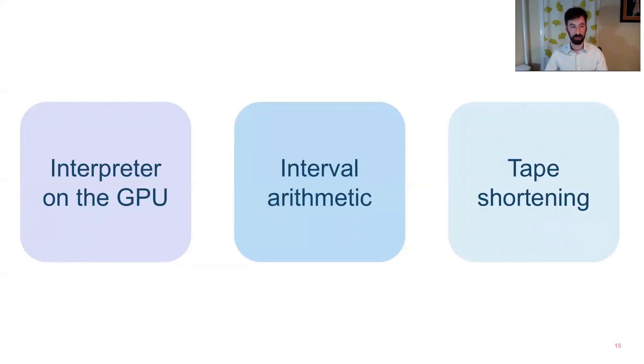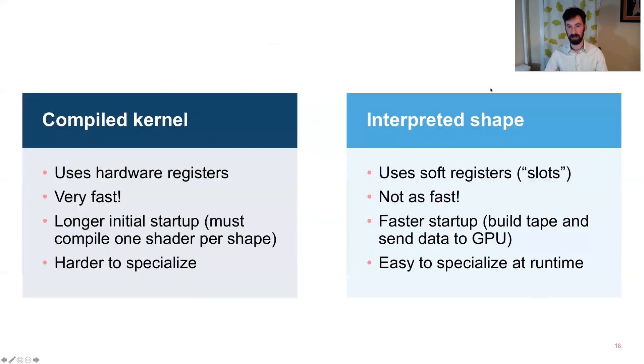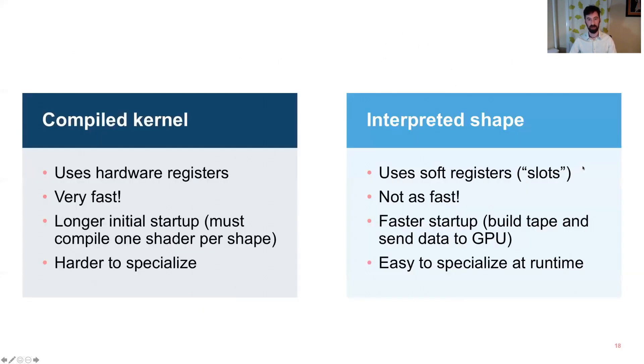We're gonna have three major building blocks that we build on. The first one is running an interpreter on the GPU. So if you think back to this ring equation here, one option is we could take this and paste it into a GLSL shader or a CUDA kernel, compile it, and run that kernel on every pixel. And that would be very fast, but relatively inflexible. And so we take a separate strategy of actually building an interpreter that runs on the GPU. So it's not going to be as fast, but it's going to be interpreting an intermediate representation of the shape, which means that you can actually specialize the shapes at runtime instead of a kernel which is only compiled once.